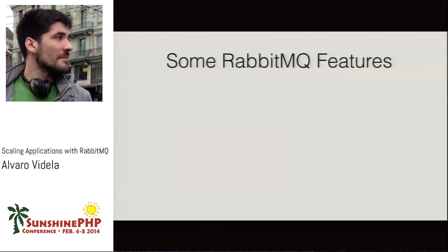Rabbit has a dead letter exchange. If you have a poison message that cannot be processed — for example your database is down or an API you need is unavailable — you can reject the message instead of acknowledging it, and the message can be dead-lettered to an exchange where you handle those messages separately. There are also alternate exchanges: remember when I first put the exchange on the simulator without any queue bound, messages were being dropped? You can set an alternate exchange to handle those unroutable messages.